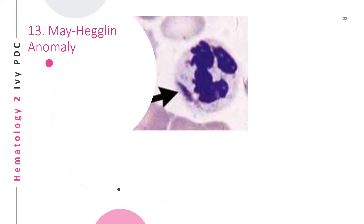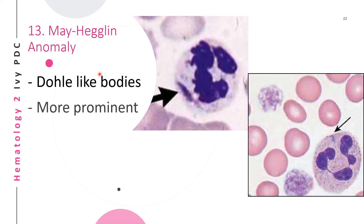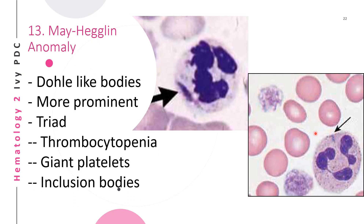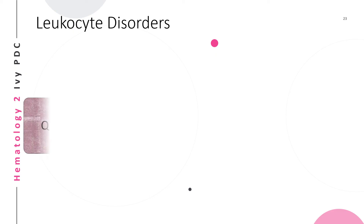The next WBC anomaly is the May-Hegglin anomaly, which looks like Döhle bodies. To distinguish May-Hegglin from a Döhle body, May-Hegglin anomaly appears in a triad: thrombocytopenia, giant platelets, and the inclusion body. So in the presence of giant platelets along with the Döhle-looking body, we can identify it as a May-Hegglin anomaly.